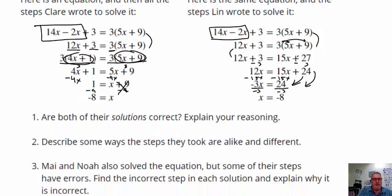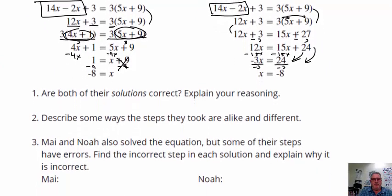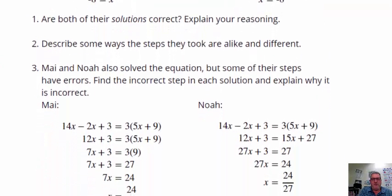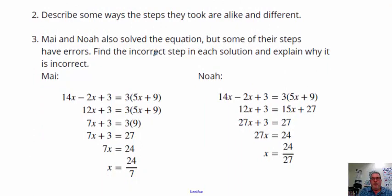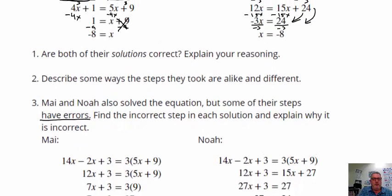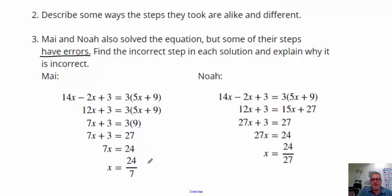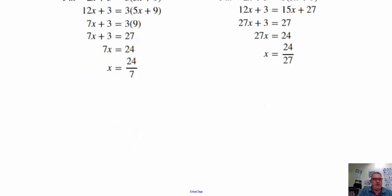Now let's look at May and Noah, because May and Noah also solved the equation but some of their steps have errors. We want to find the incorrect step in each solution. We already know that x is equal to negative 8, but they got different answers — 24 over 7 and 24 over 27. Let's see if we can figure out what May and Noah did wrong.